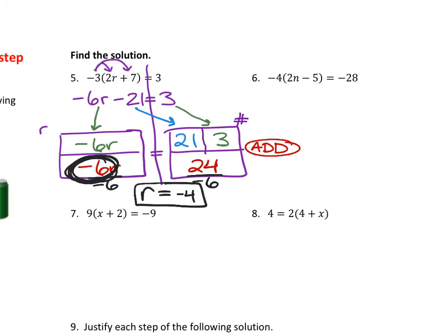If I wanted to check to make sure that this number was actually correct, I would take the negative 4 and I would plug it back into my equation. Negative 3 times 2 times negative 4 plus 7 equal to 3. We are trying to see if this is a correct statement. So we do the math. 2 times negative 4 is negative 8. Negative 8 plus 7 is negative 1. Negative 3 times negative 1 is positive 3. 3 equals 3 is a true mathematical statement, which means we got this question correct.